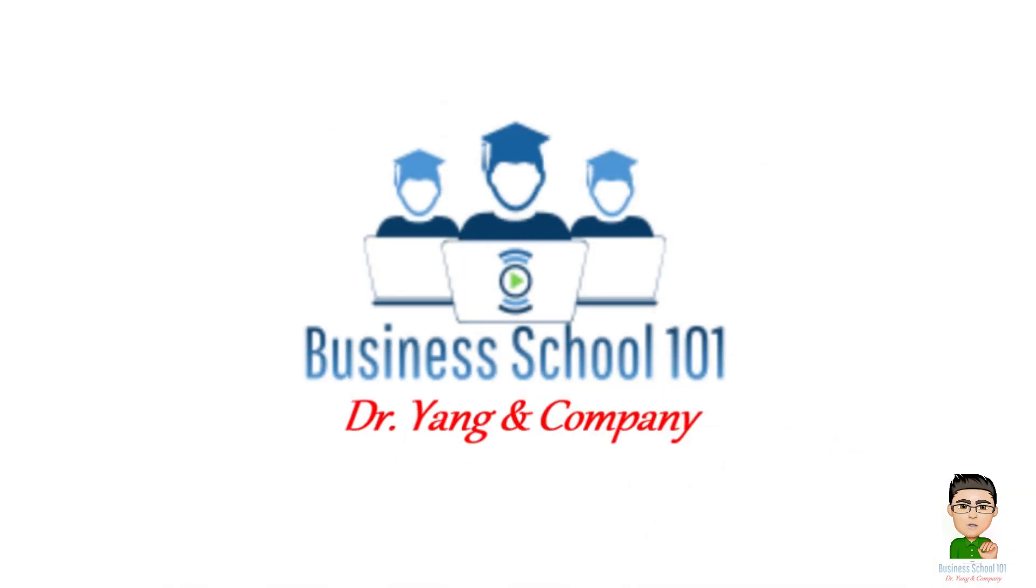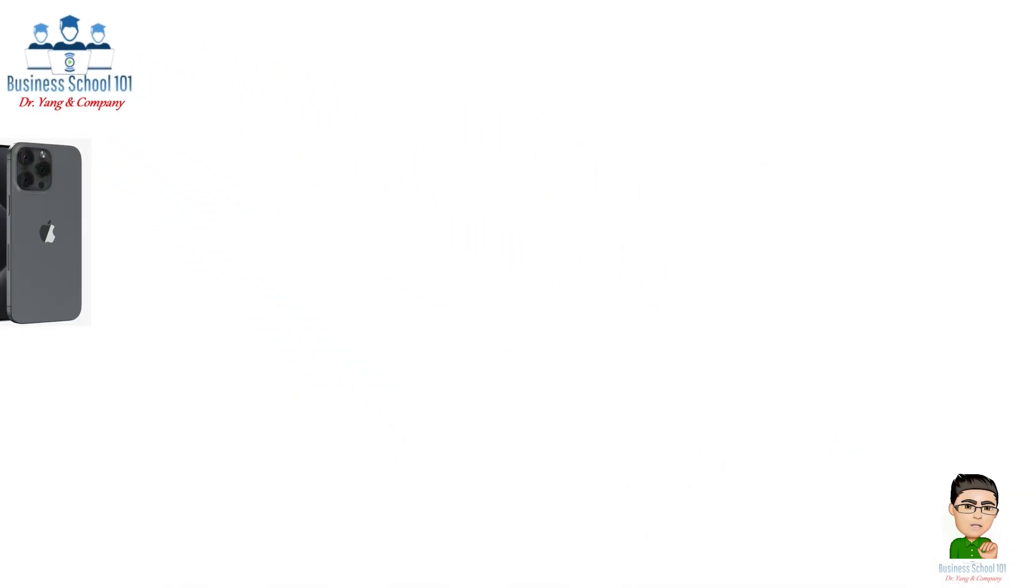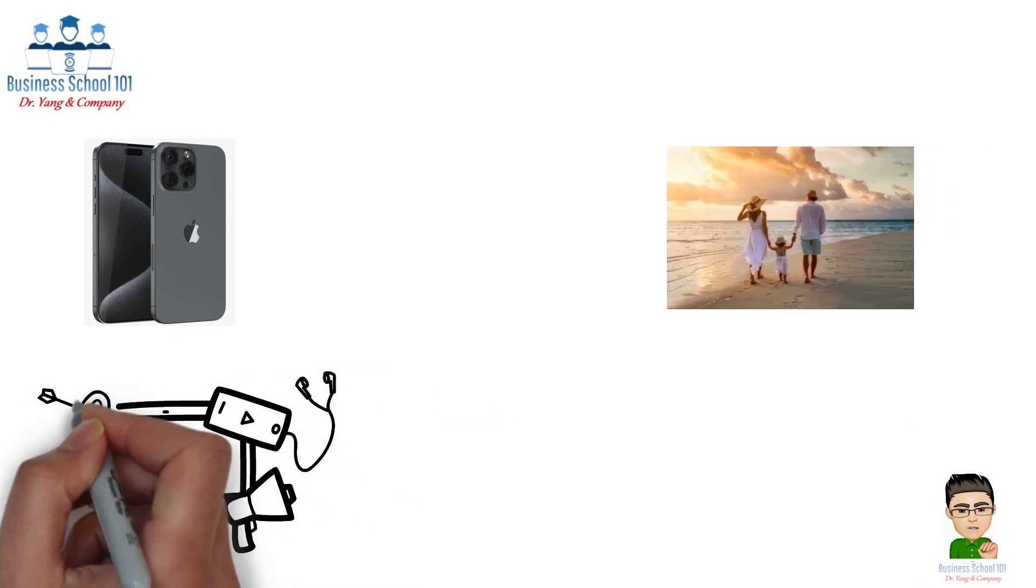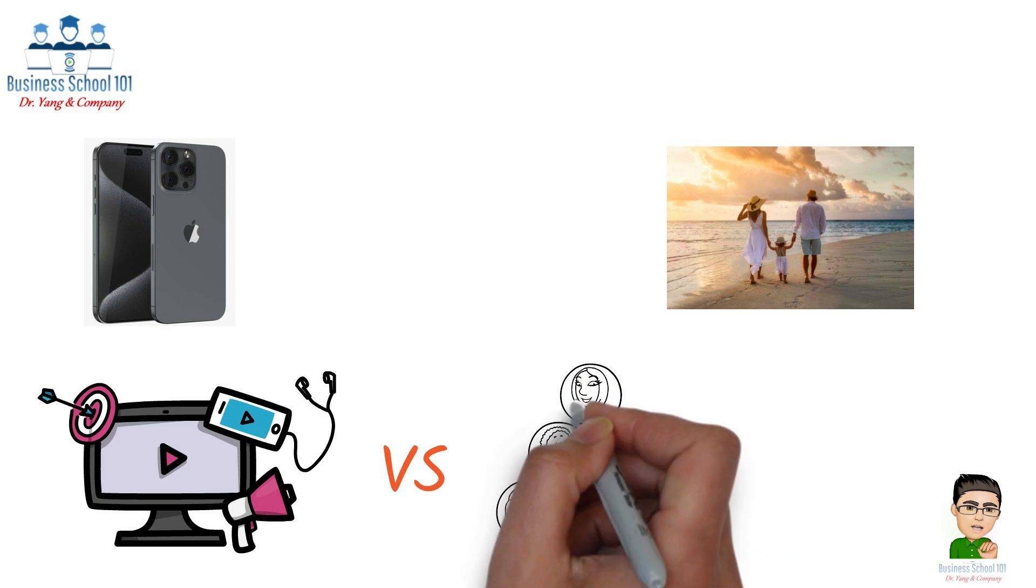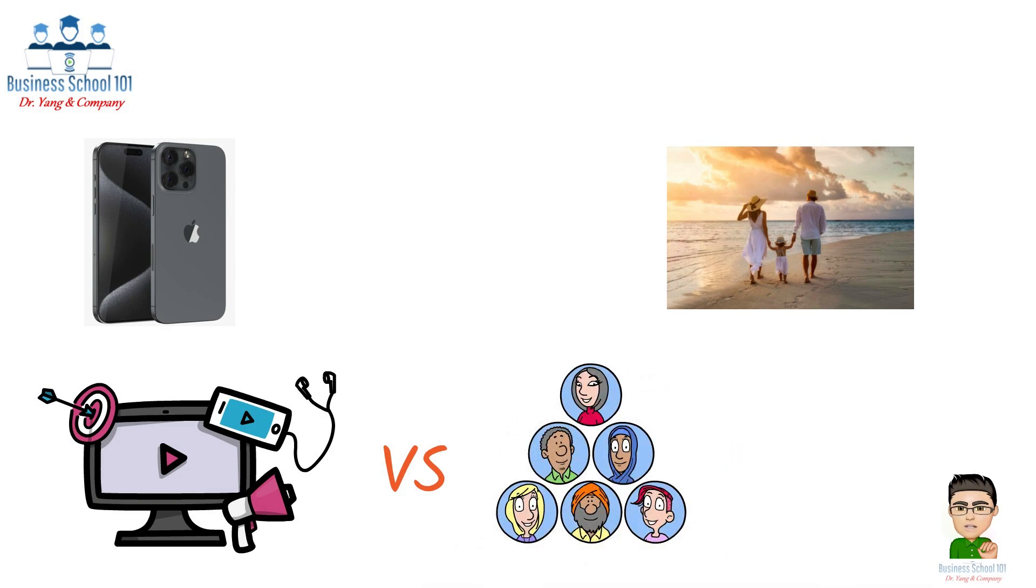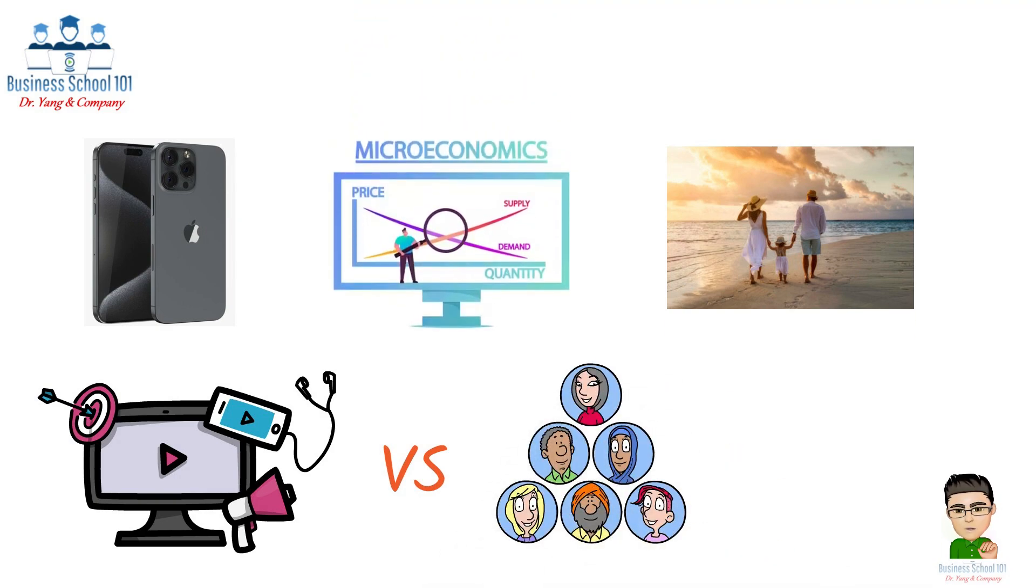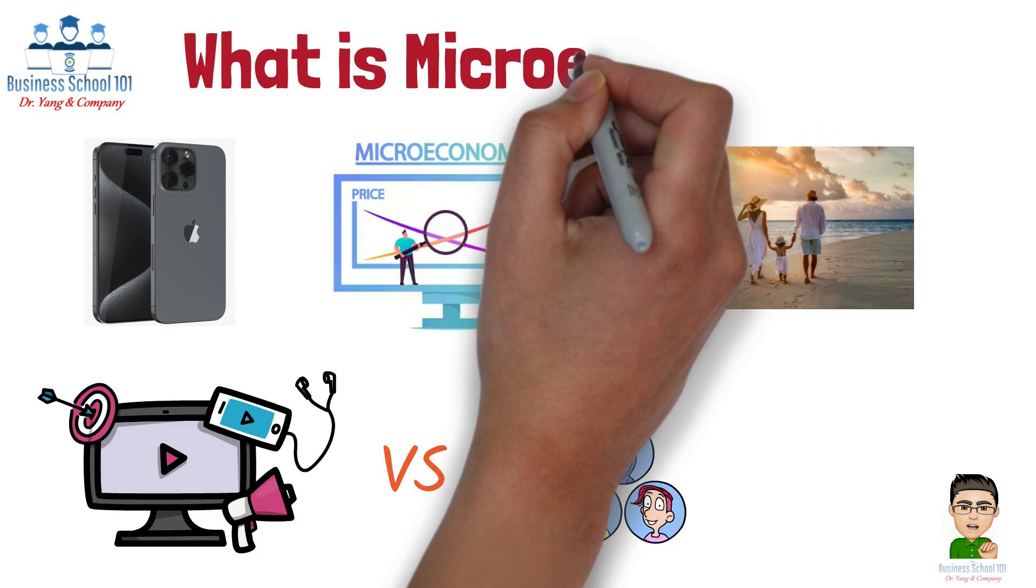Hello everyone, welcome to Business School 101. Imagine you're deciding between buying a new iPhone or saving for a family trip, or a company is choosing between investing in new equipment or hiring additional staff. These kinds of decisions are at the core of microeconomics, which helps us understand how choices affect prices and resource allocation.